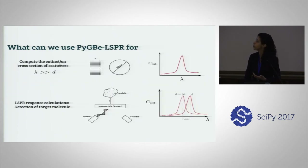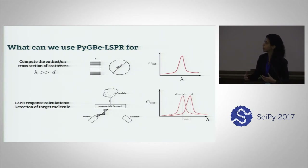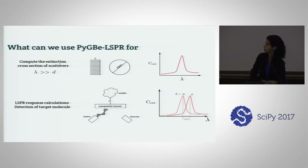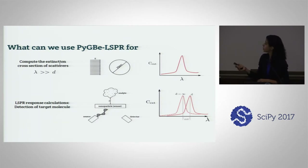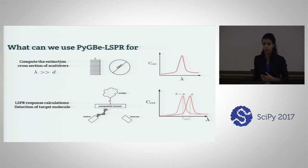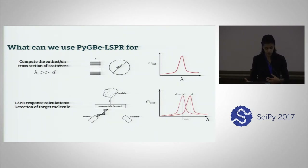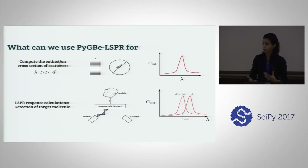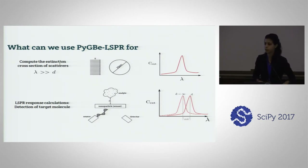What can we use LSPR for? The resonance of the plasmons and the electric field generates high levels of extinction — the sum of absorption plus scattering. A common way of quantifying this is through the extinction cross-section, which is basically the ratio of the extinction energy over the intensity of the incoming field. This is important because there is a type of biosensor called LSPR biosensors that benefit from this behavior, since the effect is highly dependent on the local dielectric environment and is reported as a shift in the resonance frequency peak.